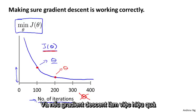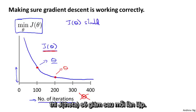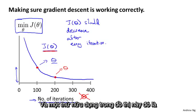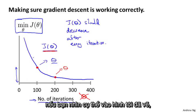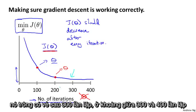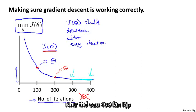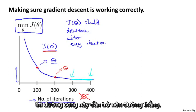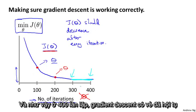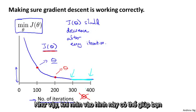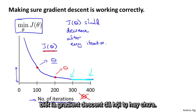If gradient descent is working properly, then J(θ) should decrease after every iteration. One useful thing this plot can also tell you: looking at this figure, it looks like by around 300 to 400 iterations, J(θ) hasn't gone down much more. By the time you get to 400 iterations, it looks like this curve has flattened out, so gradient descent has more or less converged because your cost function isn't going down much more. So looking at this figure can also help you judge whether or not gradient descent has converged.